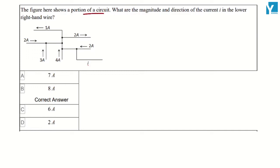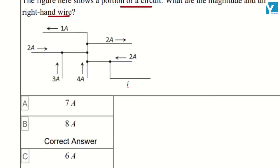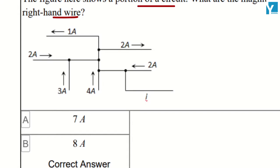The figure here shows a portion of the circuit. What is the magnitude and direction of the current in the lower right-hand wire? So as you can see, we just have to add up all the currents.